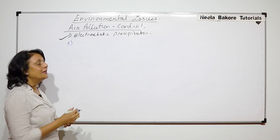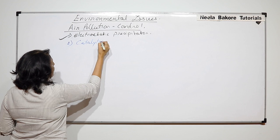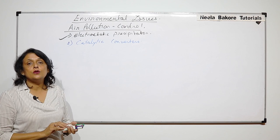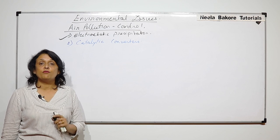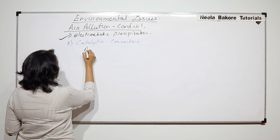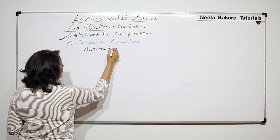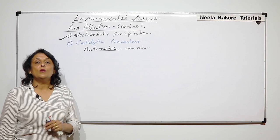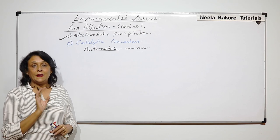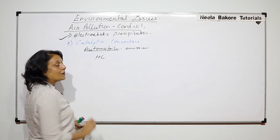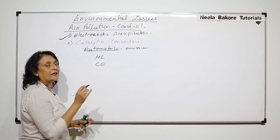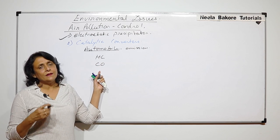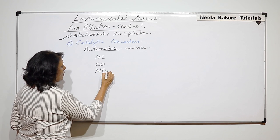Now let us talk about two more methods used to control air pollution. The second one is catalytic converters, and they are used specially to control the emission of pollutants from automobiles. In automobile emissions, there are three main things: hydrocarbons, carbon monoxide, and oxides of nitrogen.